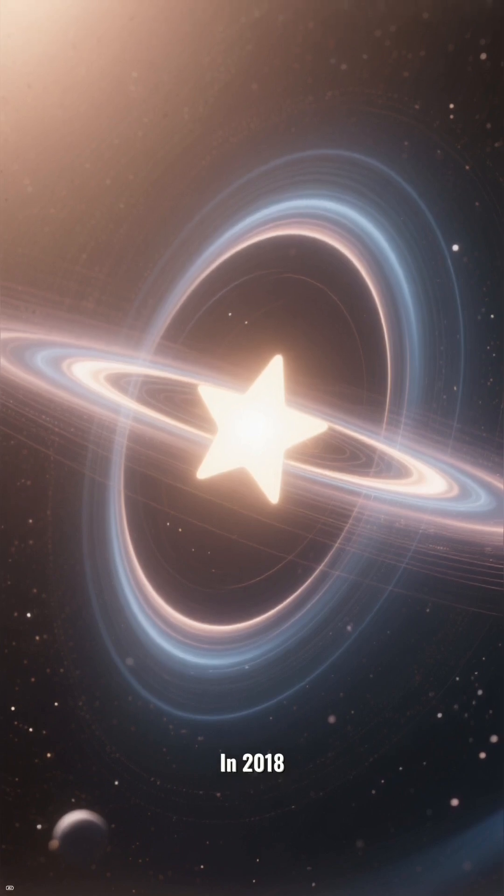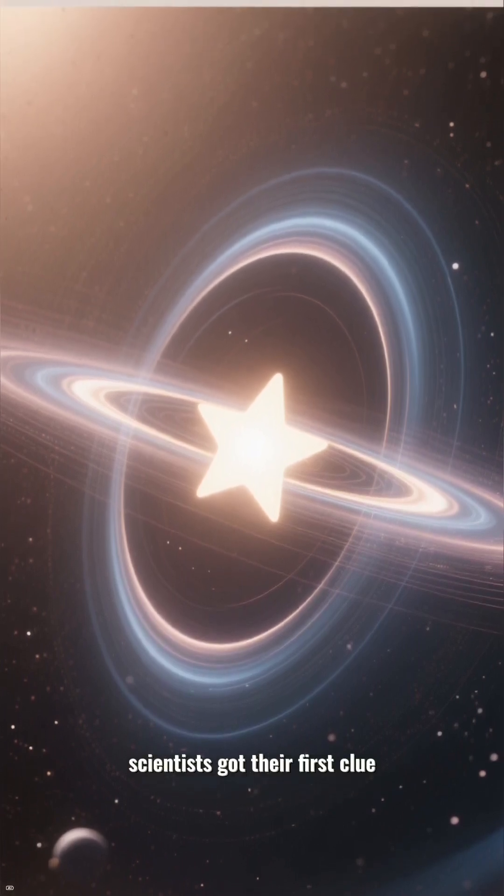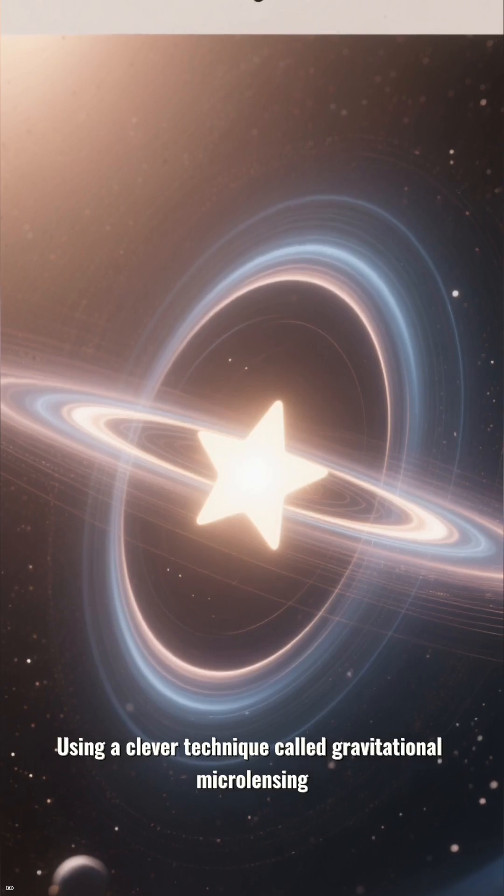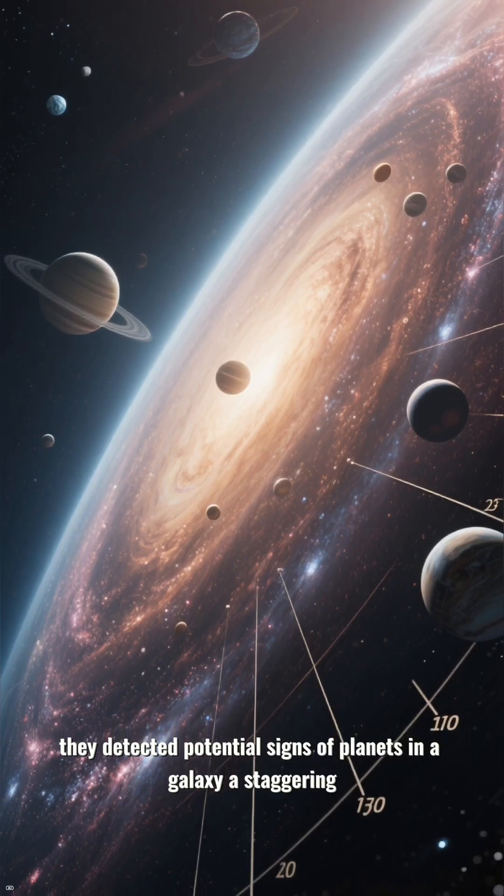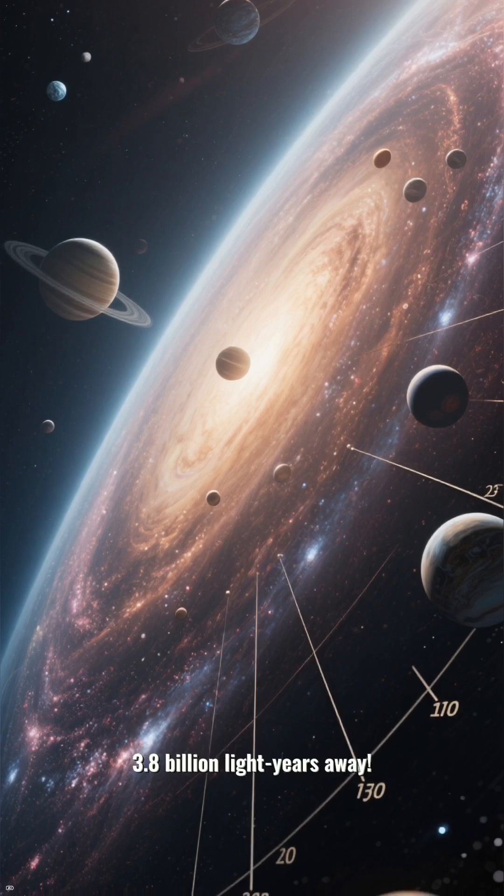In 2018, scientists got their first clue using a clever technique called gravitational microlensing. They detected potential signs of planets in a galaxy a staggering 3.8 billion light-years away.